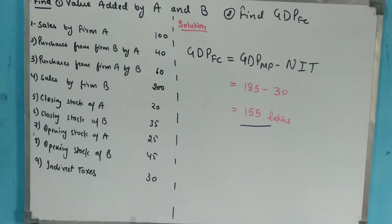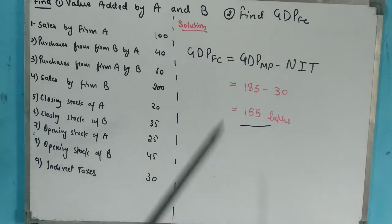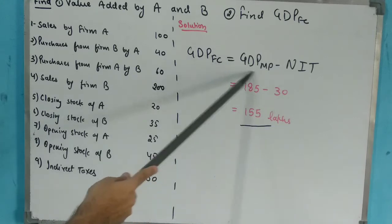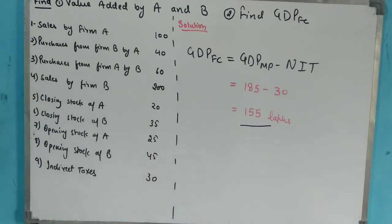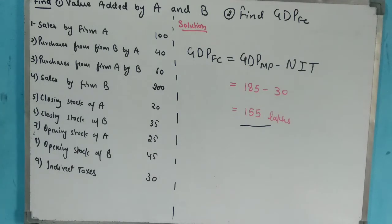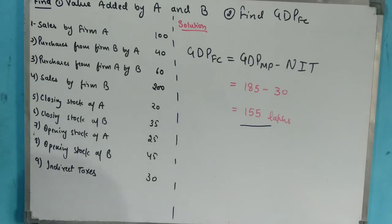Our GDP at MP came out to be 185 lakh. Now we need to find GDP at FC (GDP at Factor Cost). We will take Subsidies as 0, so NIT = Indirect Taxes minus Subsidies = 30 − 0 = 30. Therefore, GDP at FC = 185 − 30 = 155 lakh.